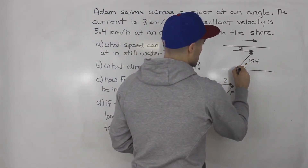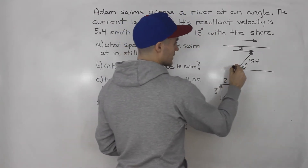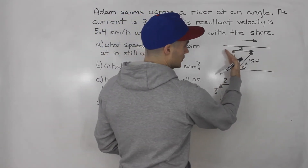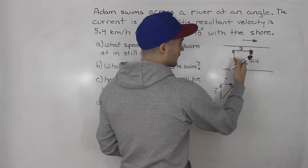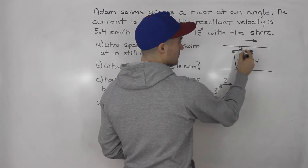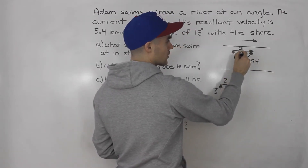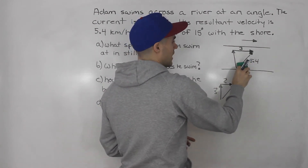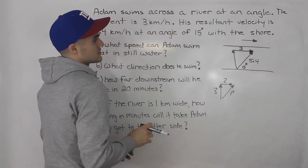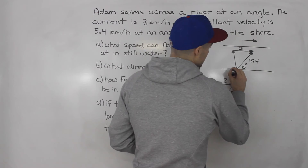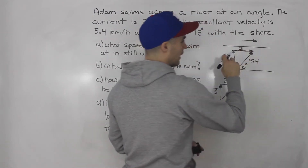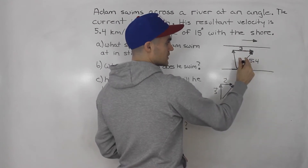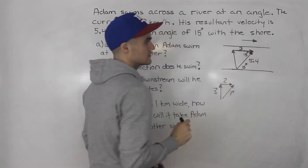If we draw the swimming vector S, it's going to look something like this. This diagram assumes Adam is swimming a little bit to the left of the vertical, but it's very possible he might swim to the right — we'll figure that out when we solve for the angles. Notice that the shore and the current are parallel with a line going through both of them, so we can use the Z-pattern to figure out this angle. If the resultant is 15 degrees with the shore, that means this angle here is 15 degrees as well.